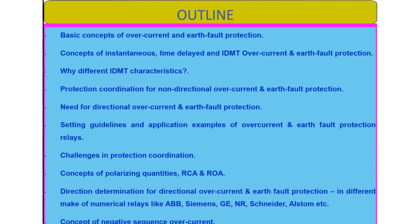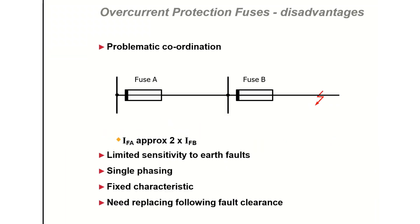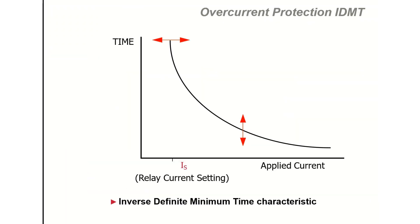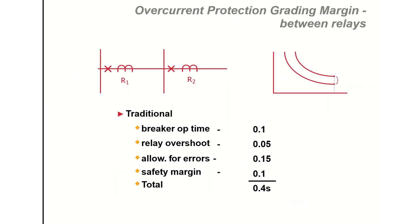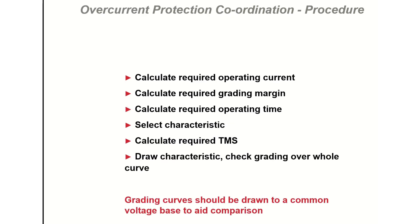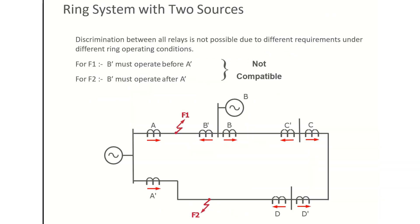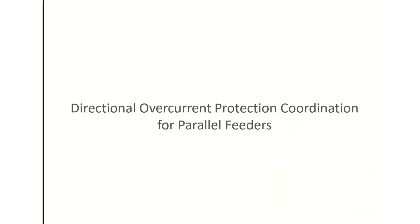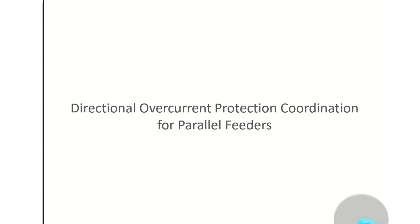Now in this session, we are going to discuss about the need for directional overcurrent relays in case of parallel feeder applications. We will discuss in detail about the challenges in case of parallel feeders, for the case of radial system with parallel feeders. Similar concepts will be applicable for ring connected systems. This session will focus only on the directional overcurrent protection coordination for parallel feeders.